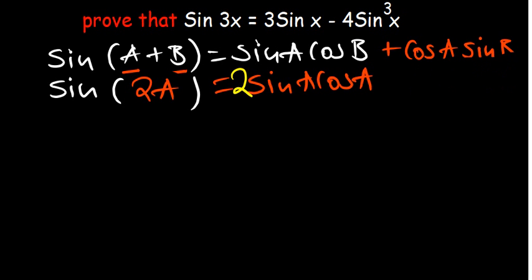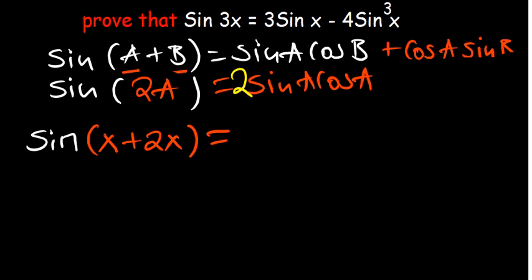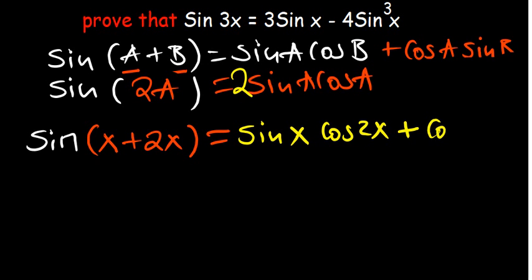Now let's get started. We want to express sin(3x) in terms of an addition, so sin(3x) = sin(x + 2x). Applying the addition formula, this equals sin(x)cos(2x) + cos(x)sin(2x). Now we need to substitute the double angle expressions.